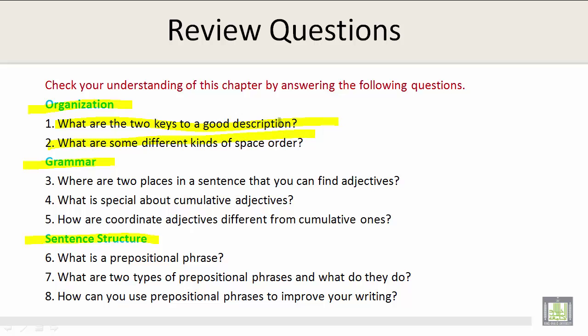There are three questions under Grammar to answer. Where are two places in a sentence that you can find adjectives? What is special about cumulative adjectives? And how are coordinate adjectives different from cumulative ones?